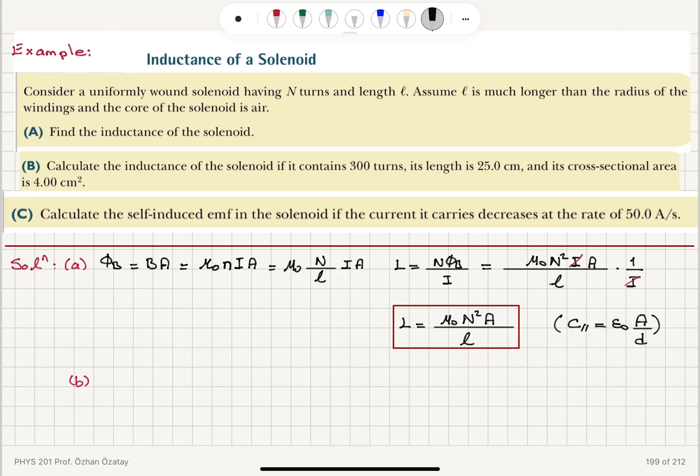Now let's give a numerical value for the inductance. The inductance L is permeability of free space 4 pi 10 to minus 7 in SI units multiplied by capital N squared. So we have 300 turns, 300 squared divided by the length. Length is 25 centimeters, 25 times 10 to minus 2 meters. And the area is 4 centimeters squared, 4 times 10 to minus 4 meters squared.